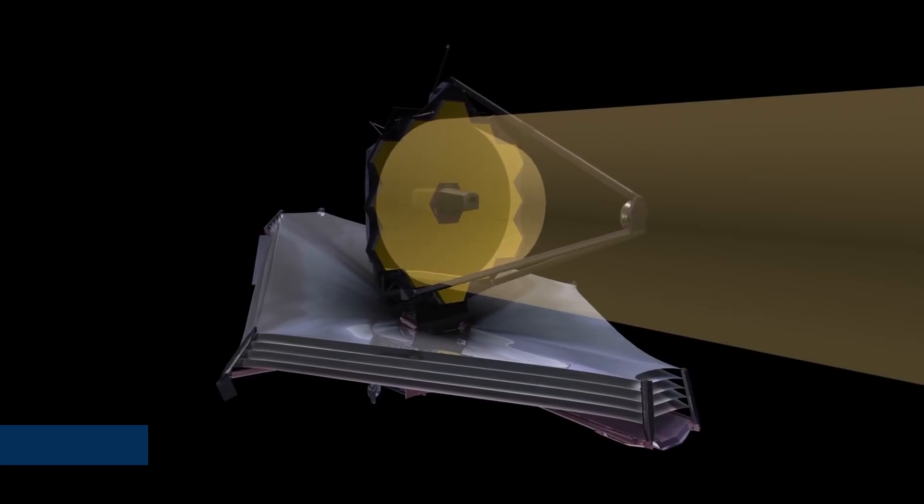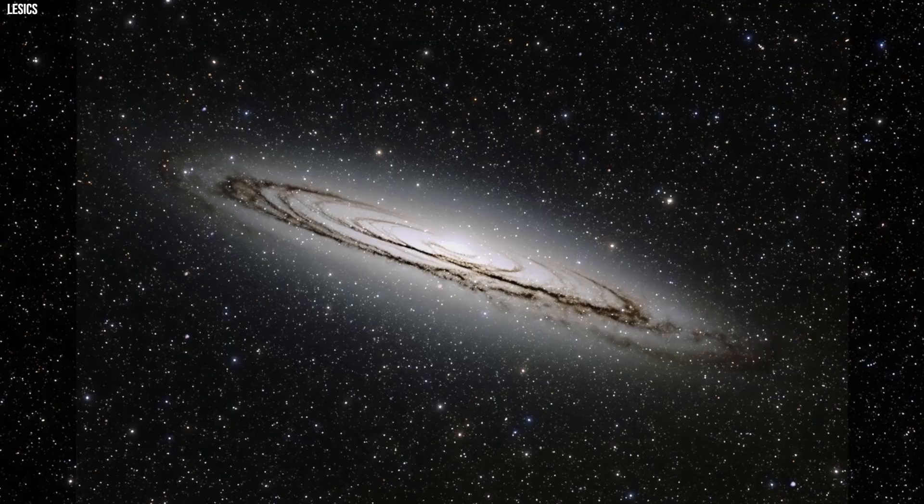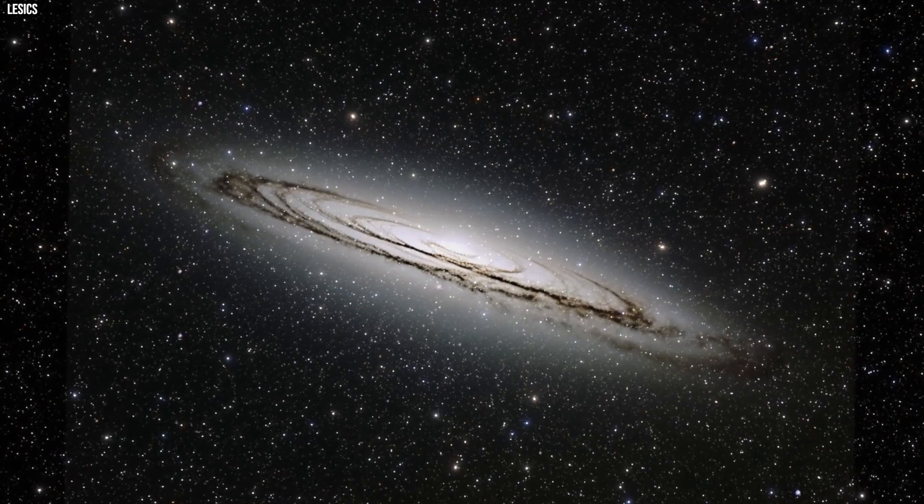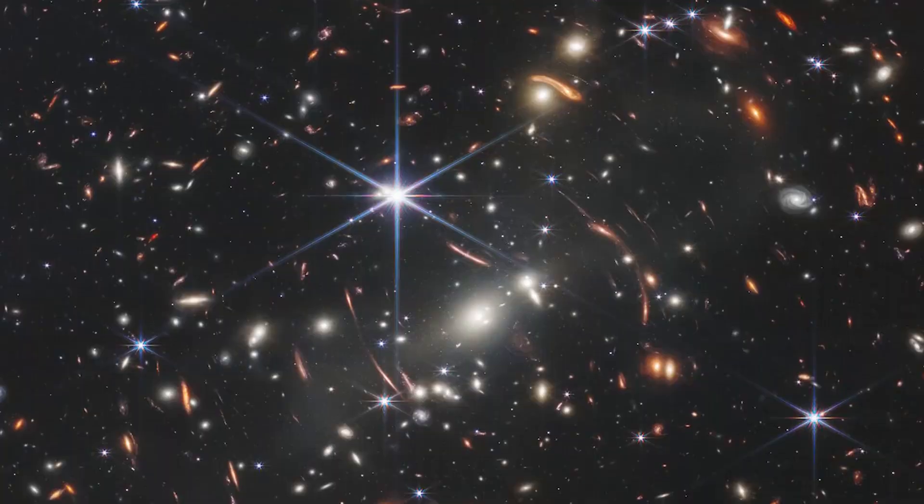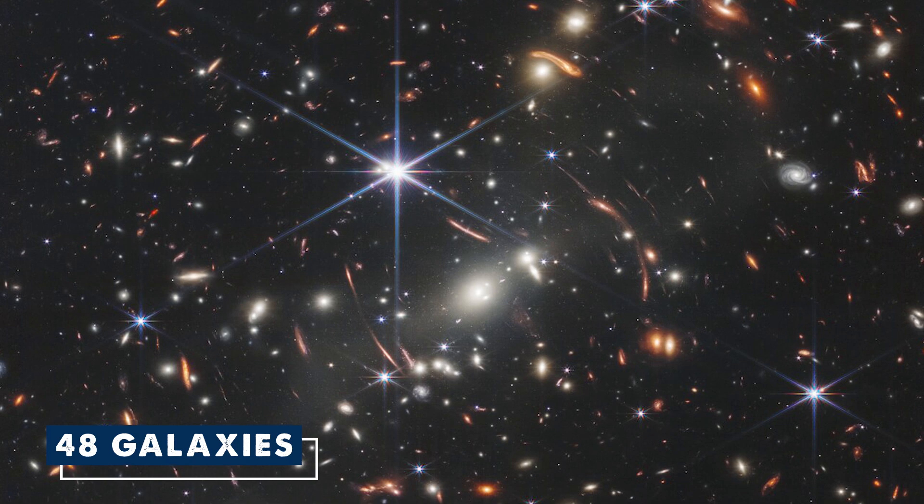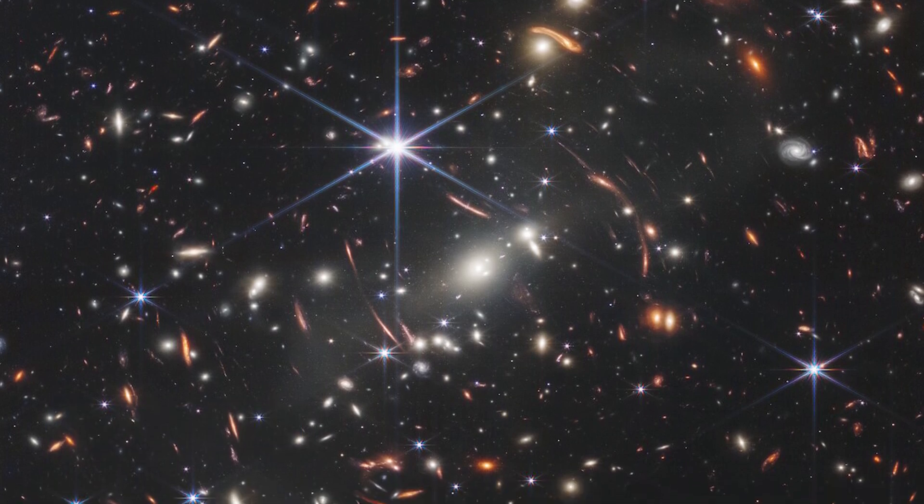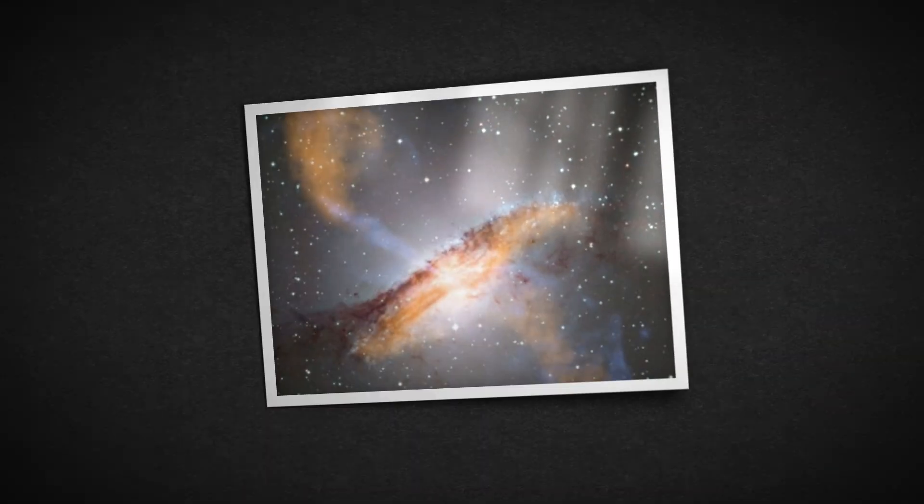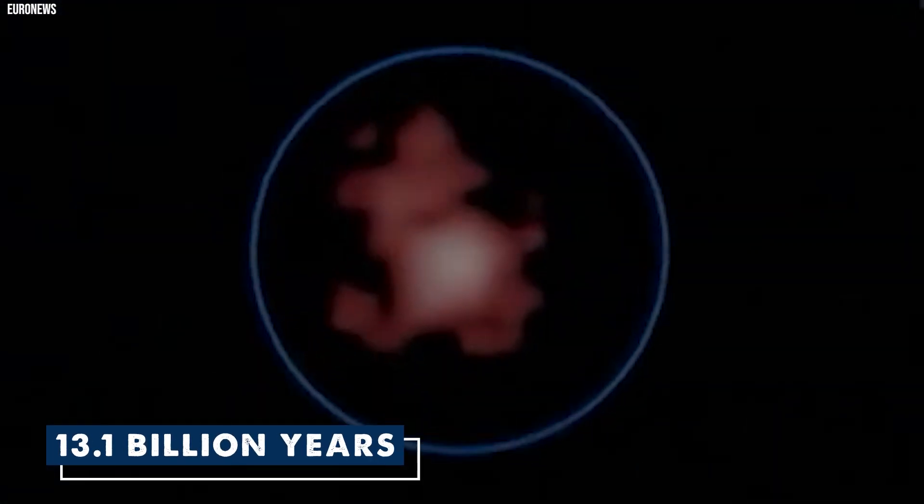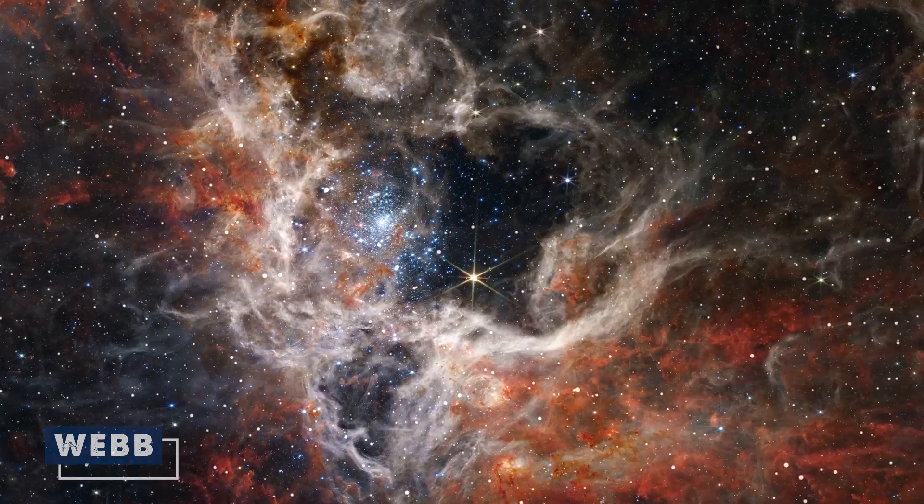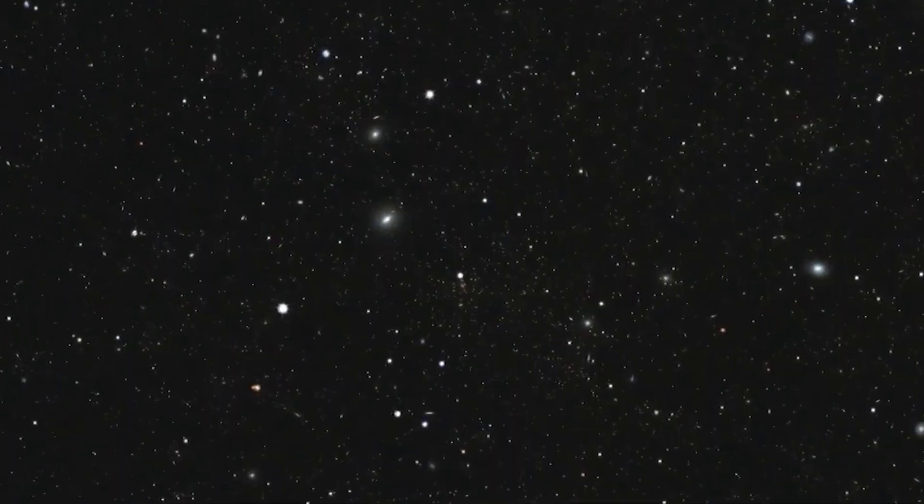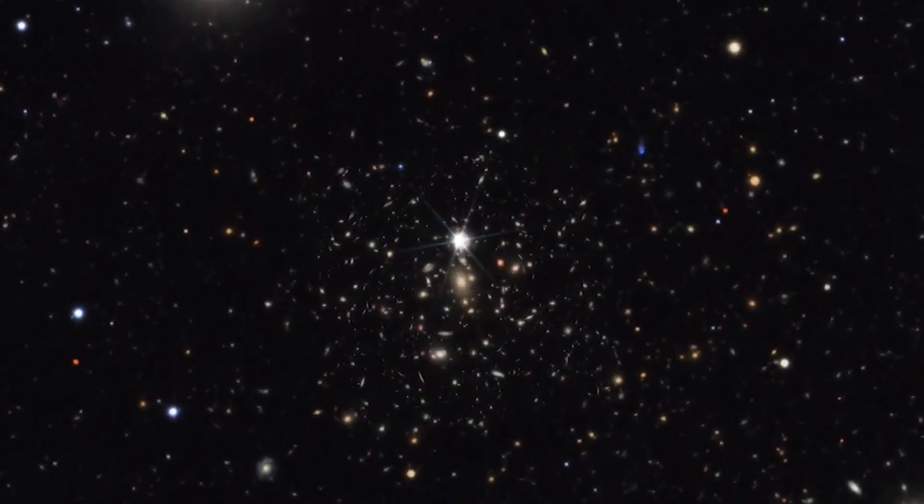Webb's not just taking pretty pictures, it's also getting special information called spectra. It's like the ID card for galaxies, telling scientists more about what they're like. Webb has a special tool called NIRSpec, which checked out 48 galaxies at once, something new in space tech. The data from Webb tells us amazing things, like light from one galaxy that traveled for 13.1 billion years before Webb caught it. Webb's special tool, NIRIS, did something cool too, showing one galaxy with its mirror image.